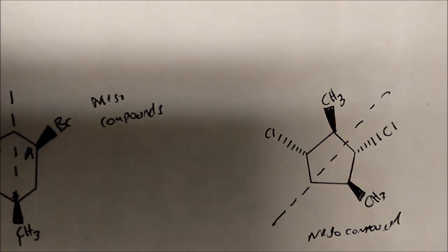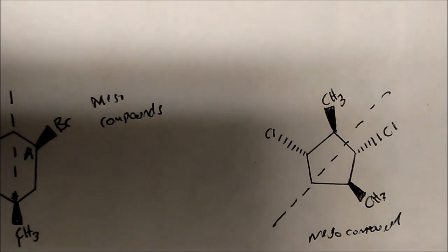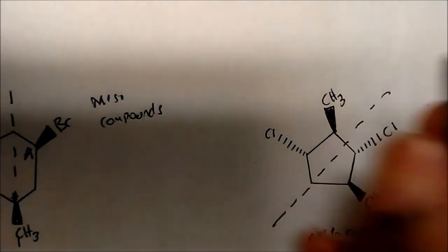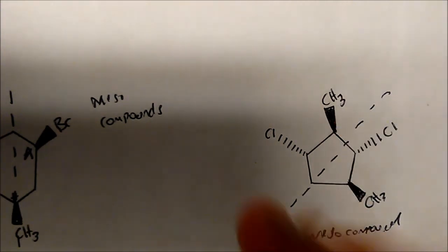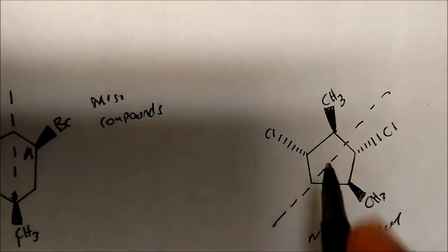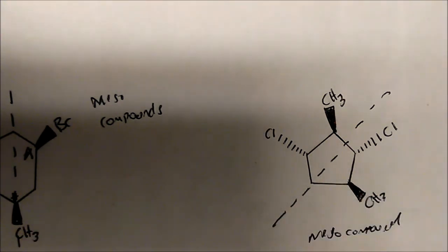So that's the difference between meso compounds and enantiomers. These compounds have multiple chiral centers as well, but they are superimposable on each other.